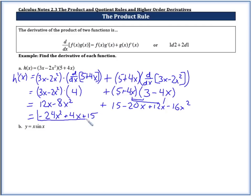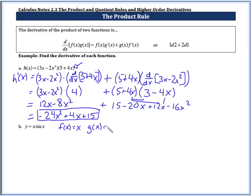So that is our derivative. Now in this example we could have actually multiplied the two functions out first and then found the derivative. But if we look at y equals x times sine x, we actually have two functions we can't combine. We could let f of x equal x, and g of x equal sine x. If we multiply these together it doesn't help us out, so we do have to use the product rule here.